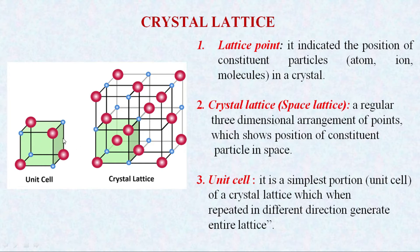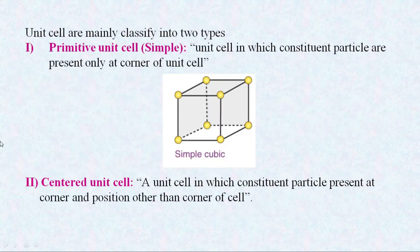So that unit is called the unit cell. This is one unit cell. If I repeat this unit cell along the x-axis, along the y-axis, and along the z-axis, I am going to get the crystal lattice. So the unit cell is nothing but the simplest portion of a crystal lattice which, when repeated in different directions, will generate the entire lattice. The structure of the crystal lattice is entirely depending on the nature of the unit cells.